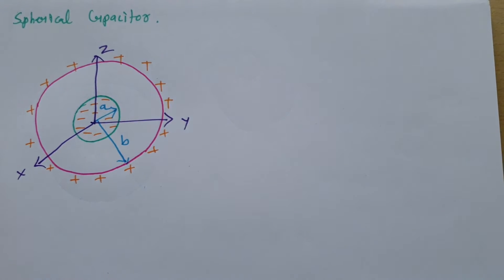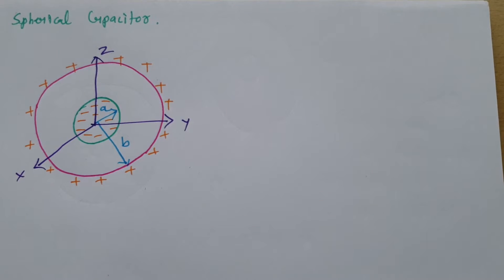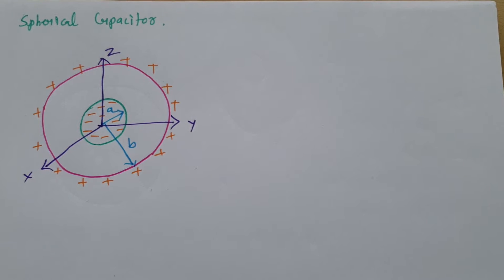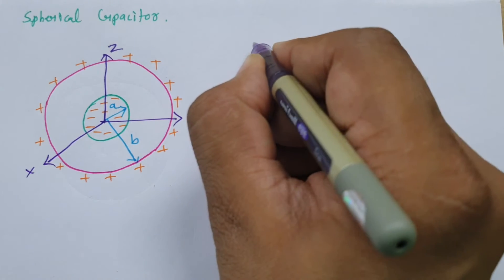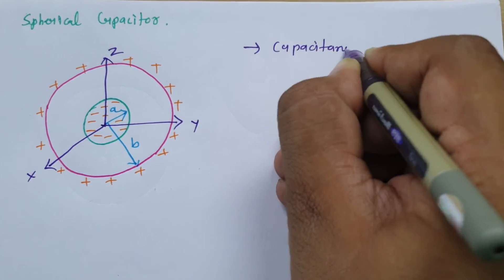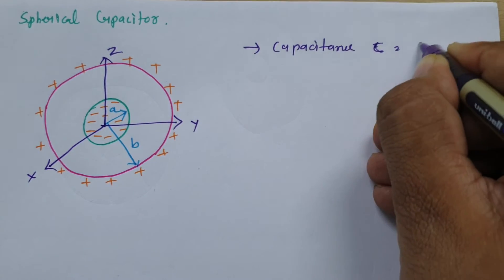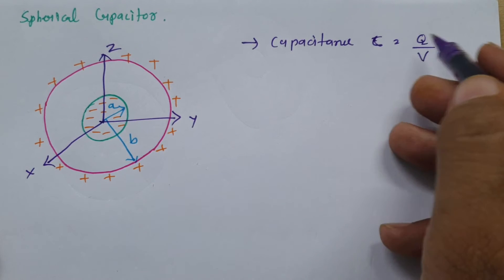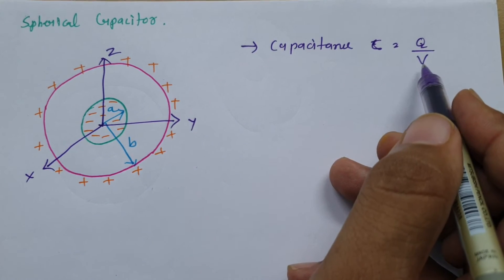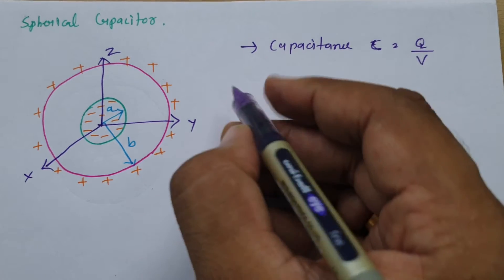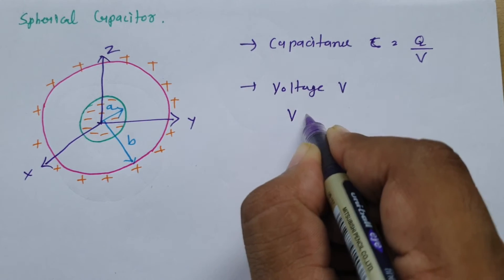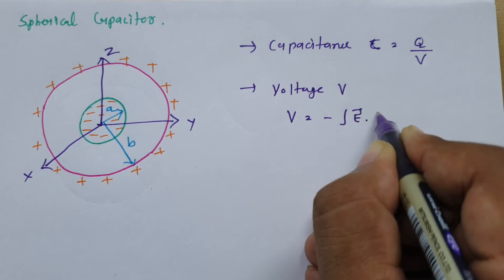We need to calculate the capacitance because of this configuration. The basic formula of capacitance is C = Q/V, where Q is the charge and V is the potential difference. We have charge Q, so first we need to calculate the potential, or voltage, and that is V = −∫E·dl.